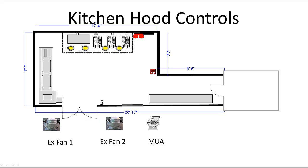When you walk into the kitchen and turn the switch on, your two exhaust fans will fire up as well as your make-up air and hood lights. The outlets underneath the hood behind the fryers and cooktop are all on a constant hot. If you hit the fire emergency button, the power to the outlets will be disconnected, the lights will be disconnected, and the make-up air will be disconnected. Exhaust fans one and two will remain running. We'll take a look at the next slide for the wiring diagram.